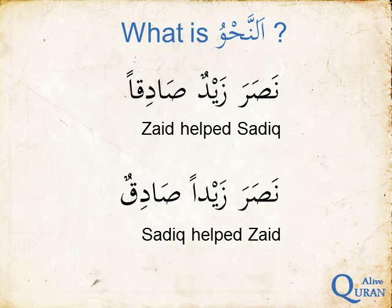Why is this? If we look closely at the two sentences, we will see that in the first sentence the word Zaidun ends with -un, and the second word Sadiqan ends with -an. In the second sentence, the word Zaidan ends with -an, whereas the word Sadiqun ends with -un. One of the rules in Arabic is that the word with -un will be the subject or the doer of the action.